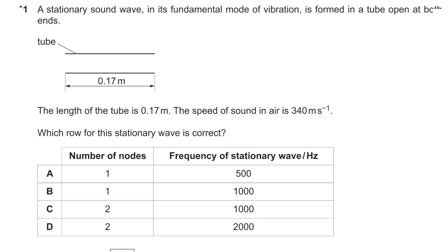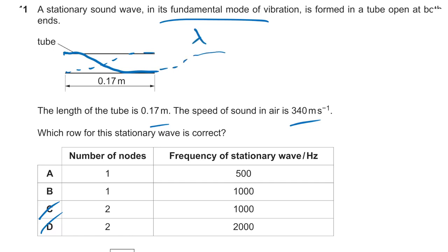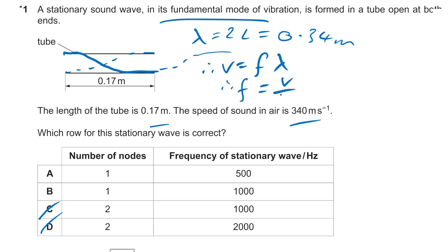Question eleven: fundamental mode of a stationary wave in a tube open at both ends. Anti-nodes must be at both ends with one node in the centre, so it's A or B. Half a wavelength fits in the tube, meaning λ = 2L = 0.34 m. Frequency = 340 ÷ 0.34 = 1000 Hz — wait, that gives us the answer B.